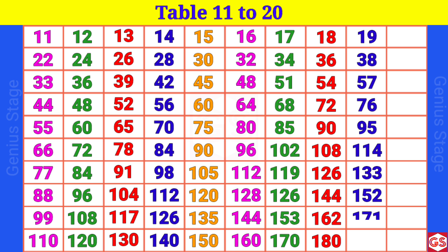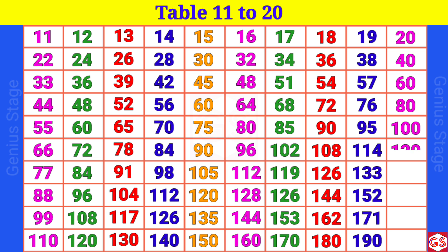19 10s are 190. 20 1s are 20, 20 2s are 40, 20 3s are 60, 20 4s are 80, 20 5s are 100, 20 6s are 120, 20 7s are 140, 20 8s are 160, 20 9s are 180, 20 10s are 200.